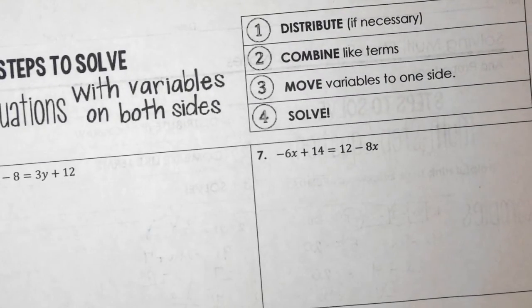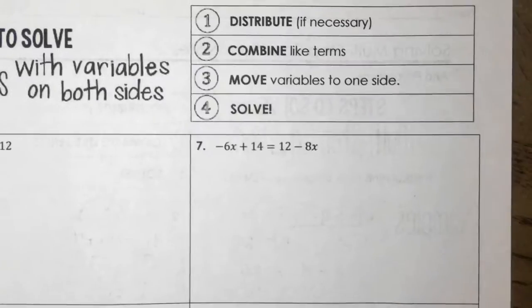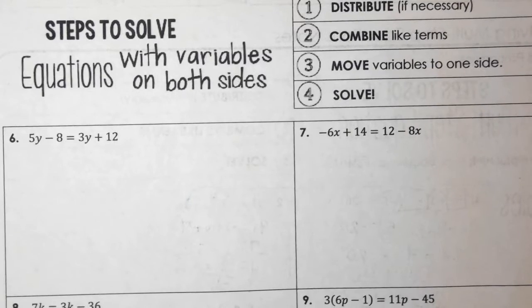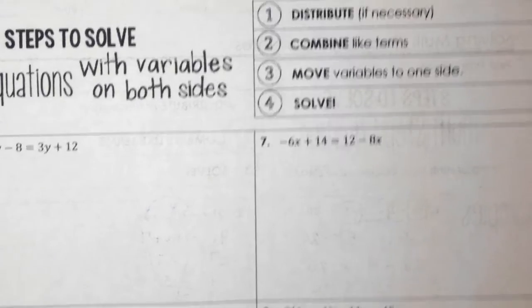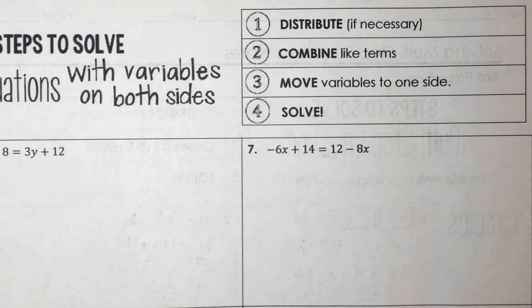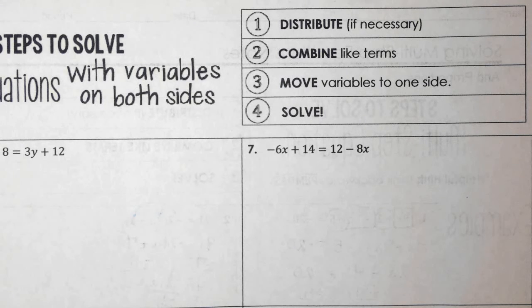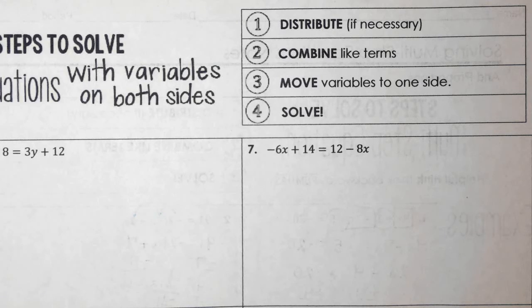On the back, we look at the steps for solving equations with variables on both sides — pretty similar to the steps on the front, just with one additional step. We still start with distribution if necessary, then combine like terms on either side. Then we move our variables to one side, because to solve for a variable you have to get it isolated first. Then solve.